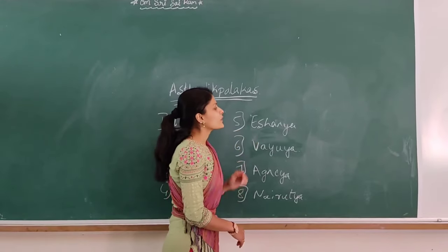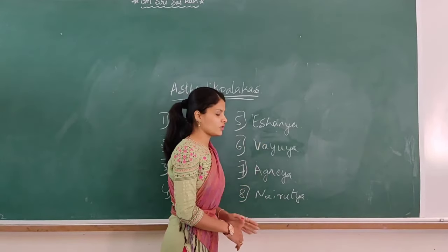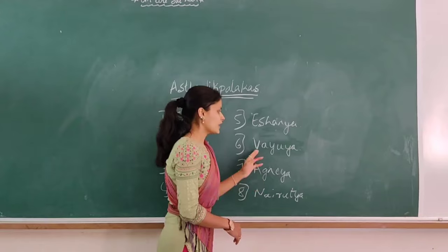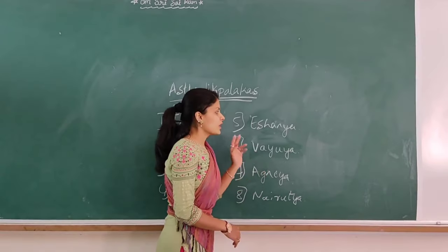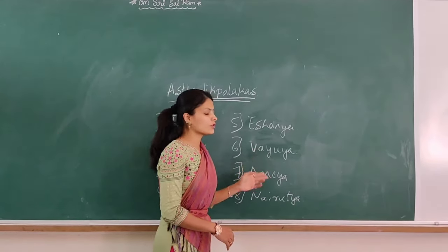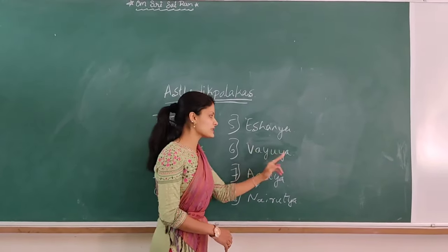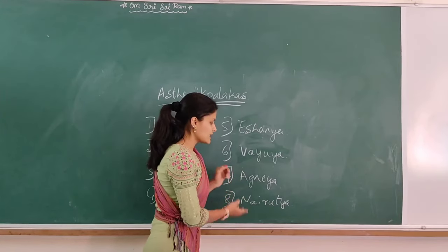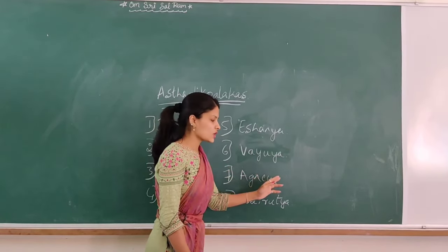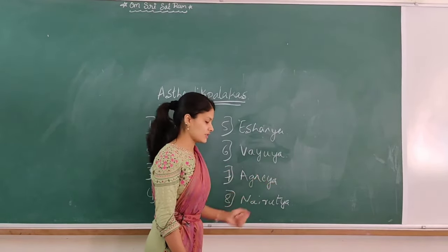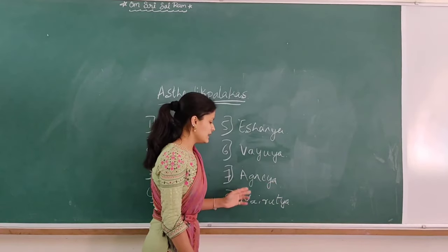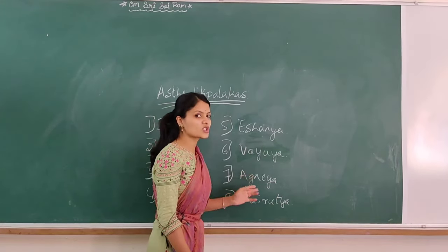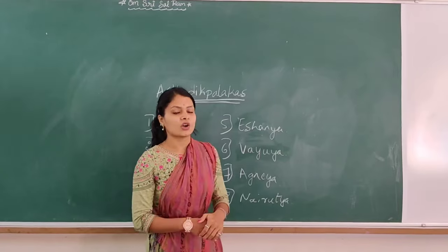Ishani. Lord Ishani is the representation for the North East direction. Vaibya. Lord Vaibya is the representation for the North West direction. Agniya. Lord Agniya is the representation for the South East direction. Nairukya is the representation for the South West direction.